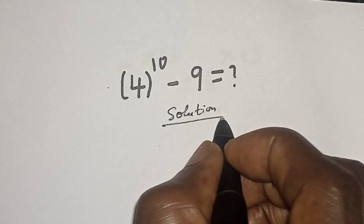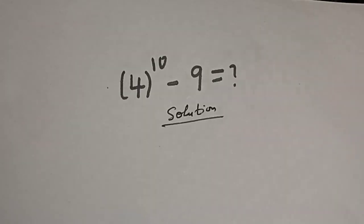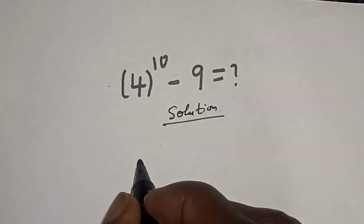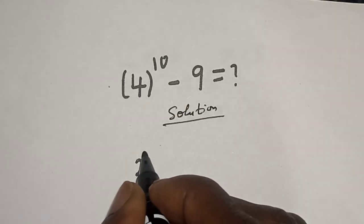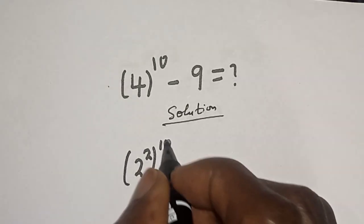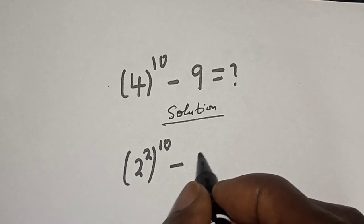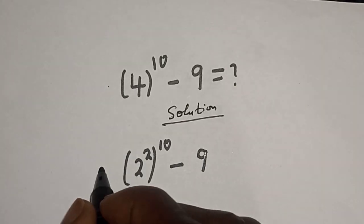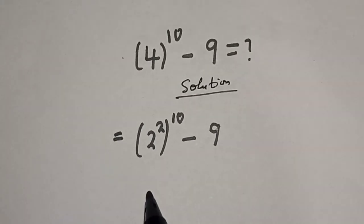Solution: 4 raised to power 10 can be written as 2 squared raised to power 10, minus 9.